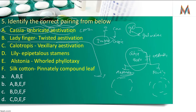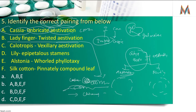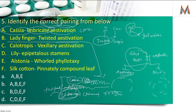Lady finger twisted में है — इसके लिए trick: cotton एक ball है जिसे twist कर सकते हो, lady finger को भी twist कर सकते हो, और china rose — 'china' यानि हमारे देश का पड़ोसी चाइना, जो थोड़ा एंठा हुआ है — तो cotton, lady finger, और china rose — ये तीनों twisted में आते हैं।